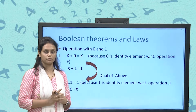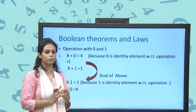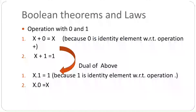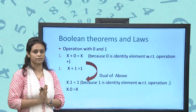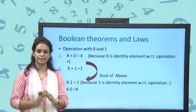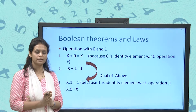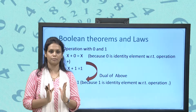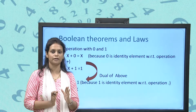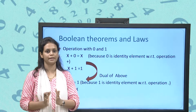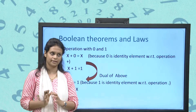Now we will start Boolean theorems and laws, relating them to set theory. In Boolean algebra we can use only 0 and 1. We consider 0 as the smallest element — like φ in set theory — and 1 as the largest — like U. Plus (+) represents union and dot (·) represents intersection.